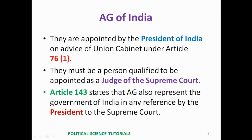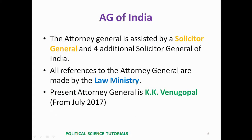To become Attorney General, a person must fulfill the eligibility criteria for being appointed as a judge of the Supreme Court. Article 143 states that the Attorney General also represents the Government of India in any reference made by the President to the Supreme Court. The Attorney General is assisted by five officers: one Solicitor General and four Additional Solicitors General of India.